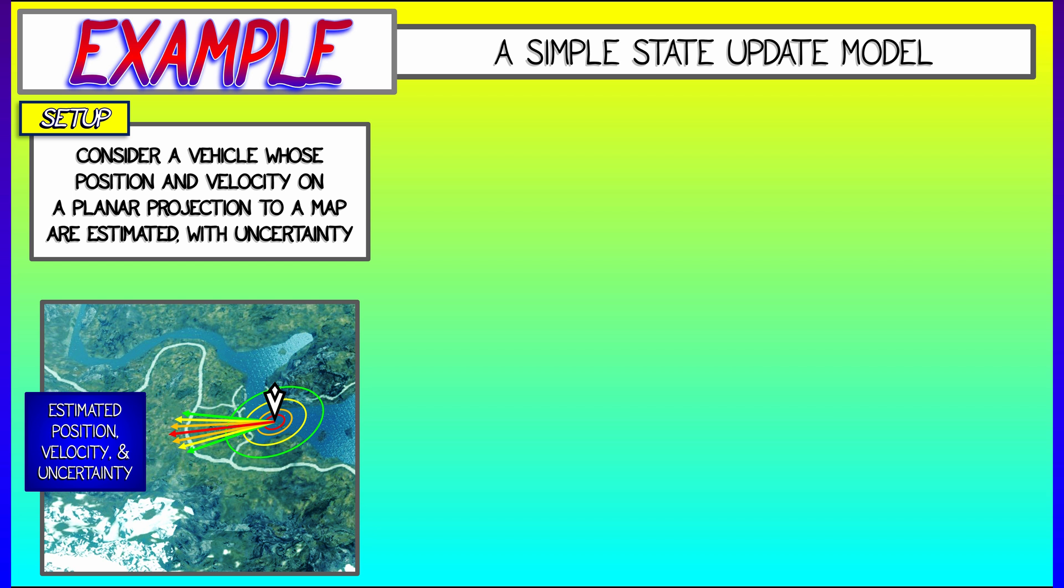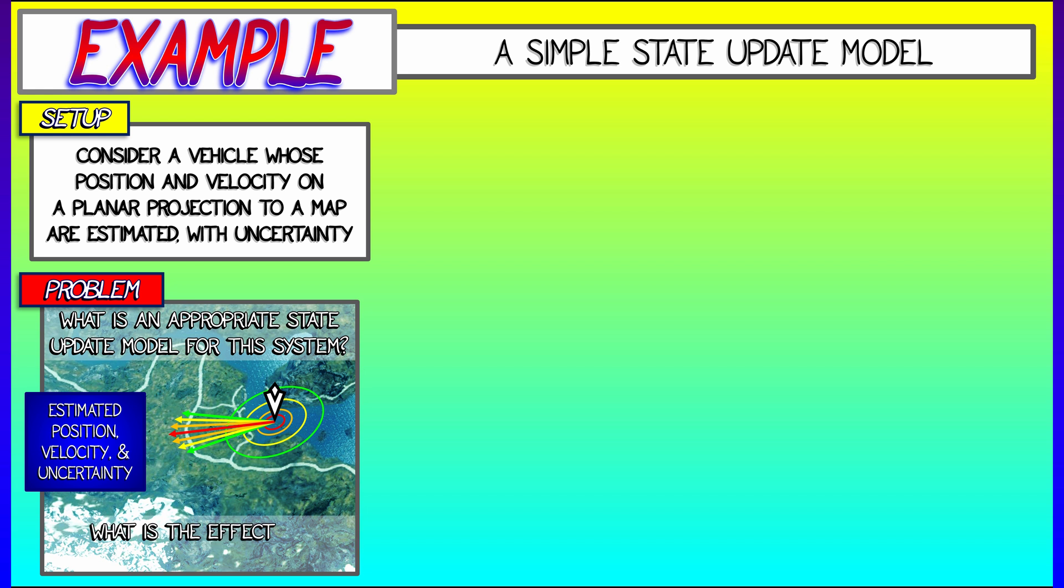Now, given that estimation for position and velocity, what is a good state update model for this system? And what would the effect of that model be on my uncertainty, on my covariance matrix?